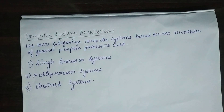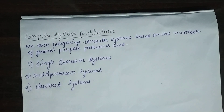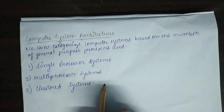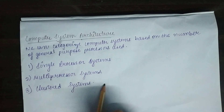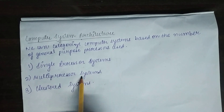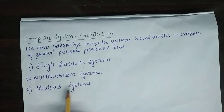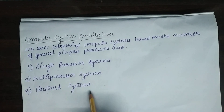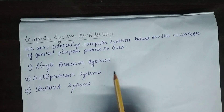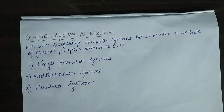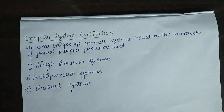Today we will discuss the different categories of systems: single processor systems, multi-processor systems, and cluster systems. These systems are categorized based on the number of general purpose processors they use.